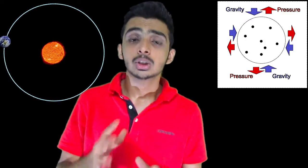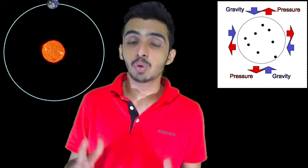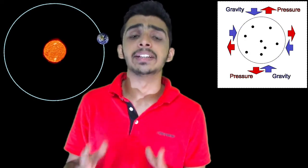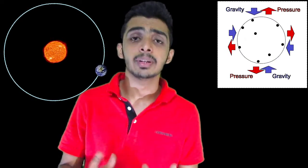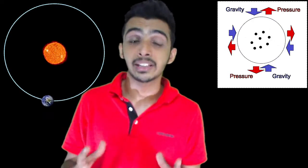So did we start discovering new planets? It was just that we had to revise the definition of planet. To be a planet, the celestial body has to orbit the Sun, it should have sufficient mass so that it can overcome its rigid body forces, and it can assume a hydrostatic equilibrium — that is a round or spherical shape.